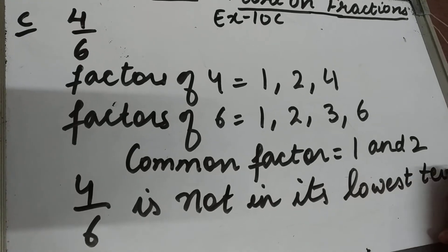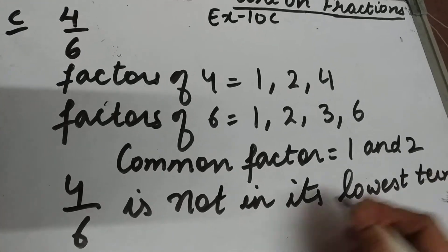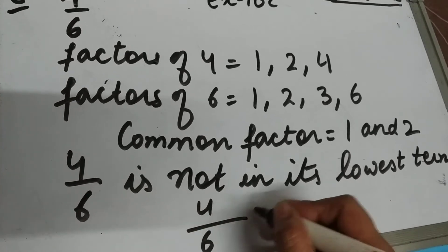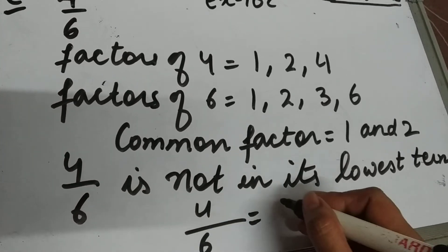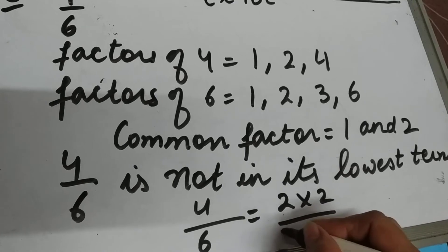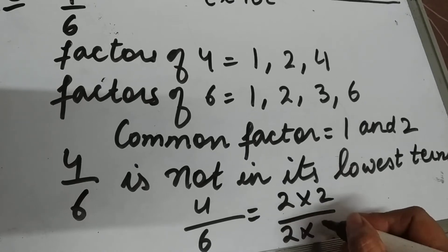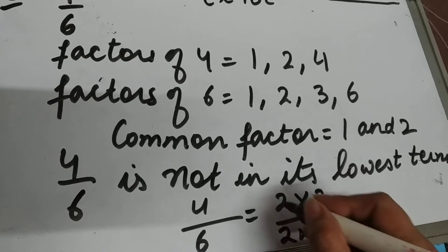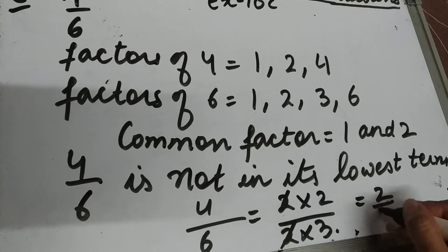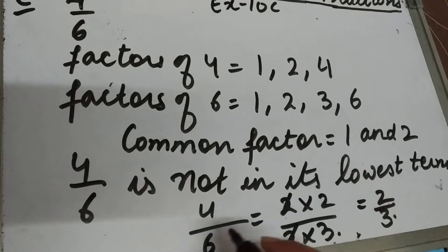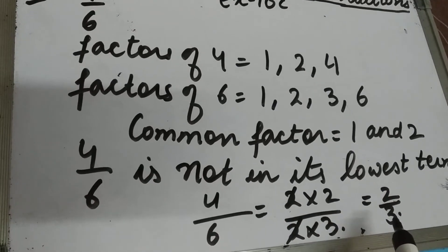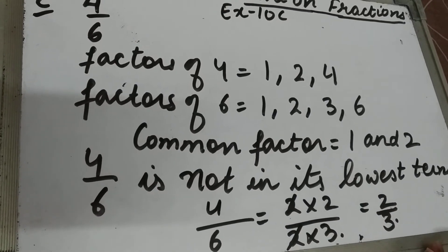We can reduce 4 by 6 further. 4 can be written as 2 multiplied by 2, and 6 can be written as 2 multiplied by 3. The 2s cancel out, giving us 2 by 3. So we have reduced 4 by 6 into 2 by 3, which means 4 by 6 is not in its lowest terms.